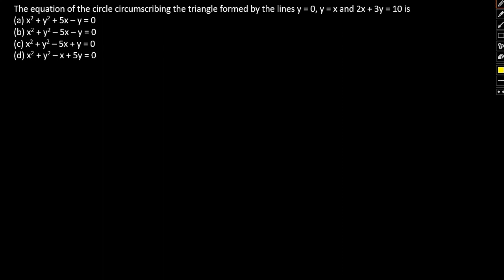Let's take a look at the question. Find the equation of the circle circumscribing the triangle formed by the lines y = 0, y = x, and 2x + 3y = 10. Multiple options are given and we need to find the equation of the circle.